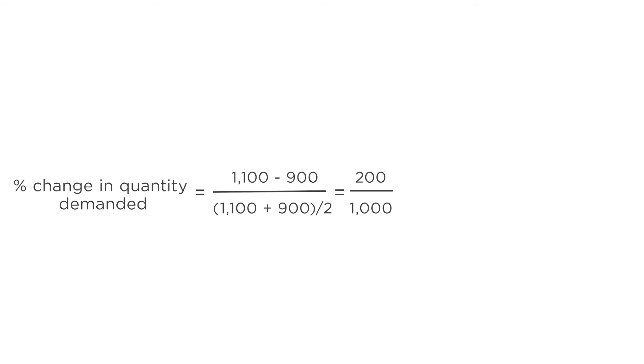We calculate the percent change in quantity demanded as the change in demand divided by the average demand. The change in demand is 1,100 minus 900, or 200. And the average demand is 1,100 plus 900 divided by 2, or 1,000. 200 divided by 1,000 is 0.2, or 20%. This is the percent change in quantity derived using the midpoint method.